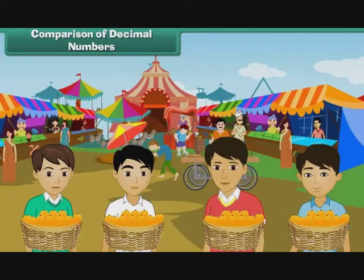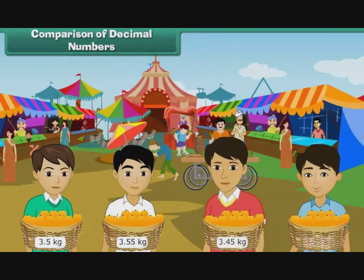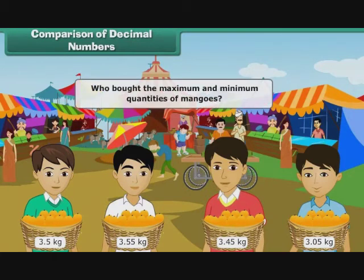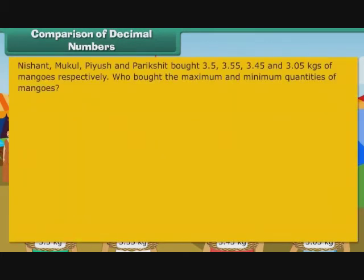Nishant, Mukul, Piyush, and Parikshit bought 3.5, 3.55, 3.45, and 3.05 kgs of mangoes respectively. Who bought the maximum and minimum quantities of mangoes? Let us first arrange the decimal quantities in descending order, that is, the decreasing order of values.